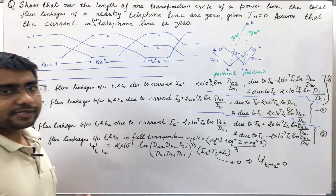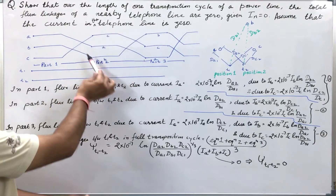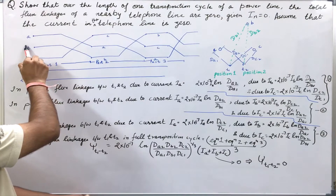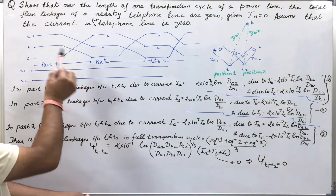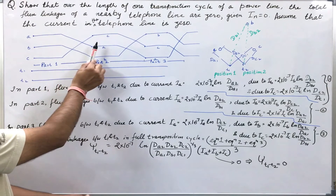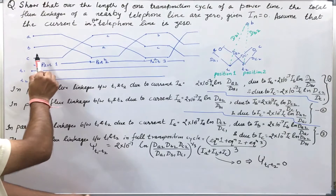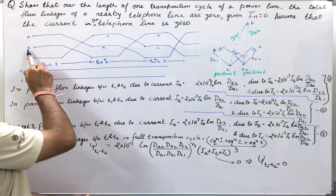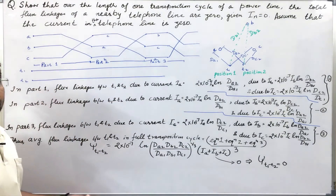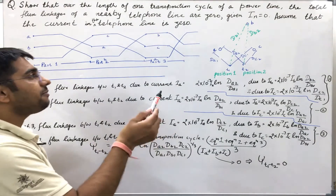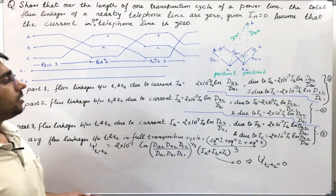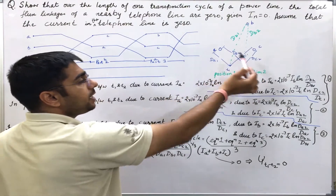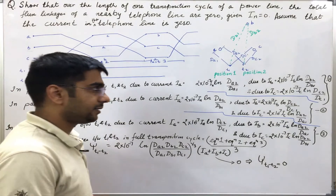What will be the distances in part 2 of the cycle? Whatever distances were there for B will now be written for A, since A will be occupying the same position which B occupied in part 1 of the cycle. So the distances will simply be the same as those for conductor B — that is, conductor A will now have distances db1 and db2. Similarly, I can write for the other conductors.